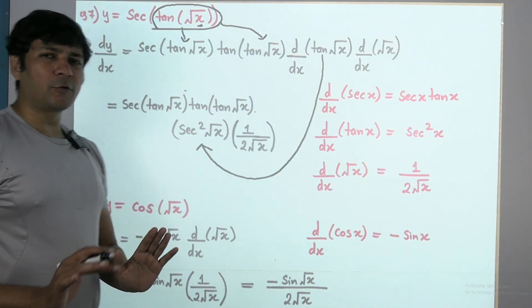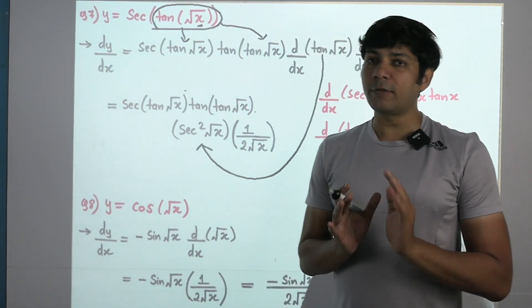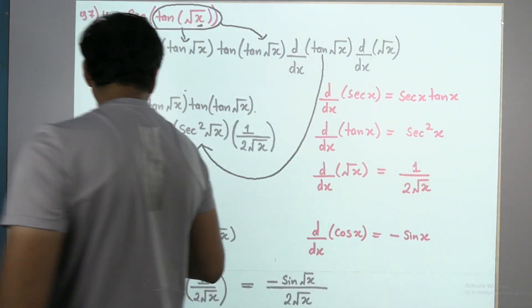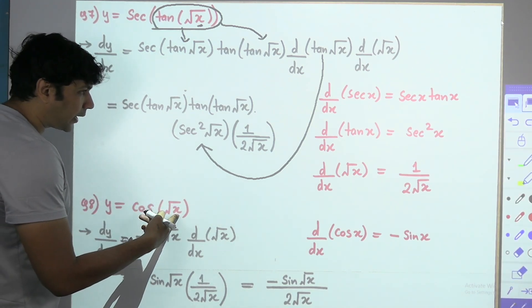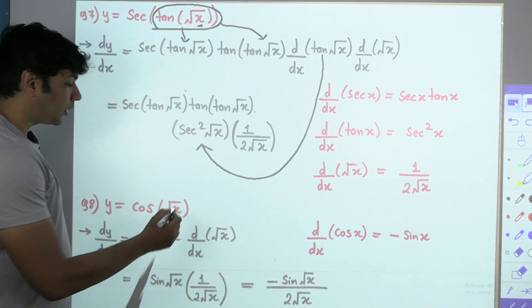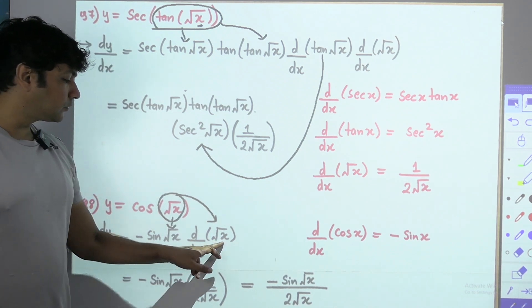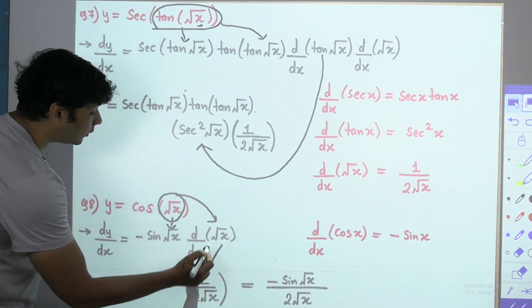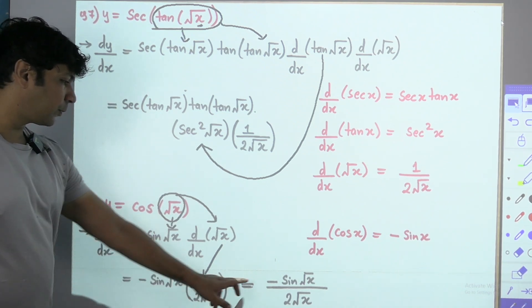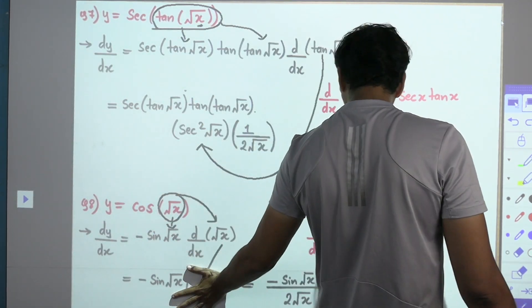Eighth question: y = cos(√x) — a 2-level chain problem. Cos of whatever comes after, the differentiation is −sin of whatever is in the bracket, since we differentiate the bracket separately. Into differentiation of √x, which is 1/(2√x). So the answer is −sin(√x) / (2√x).